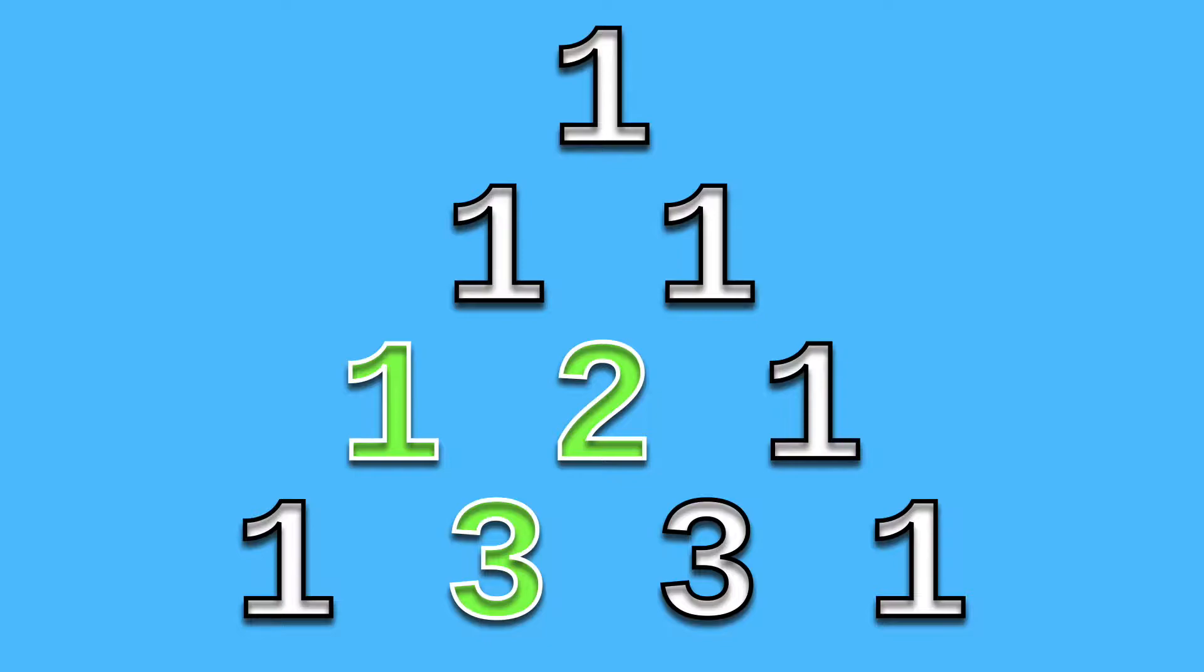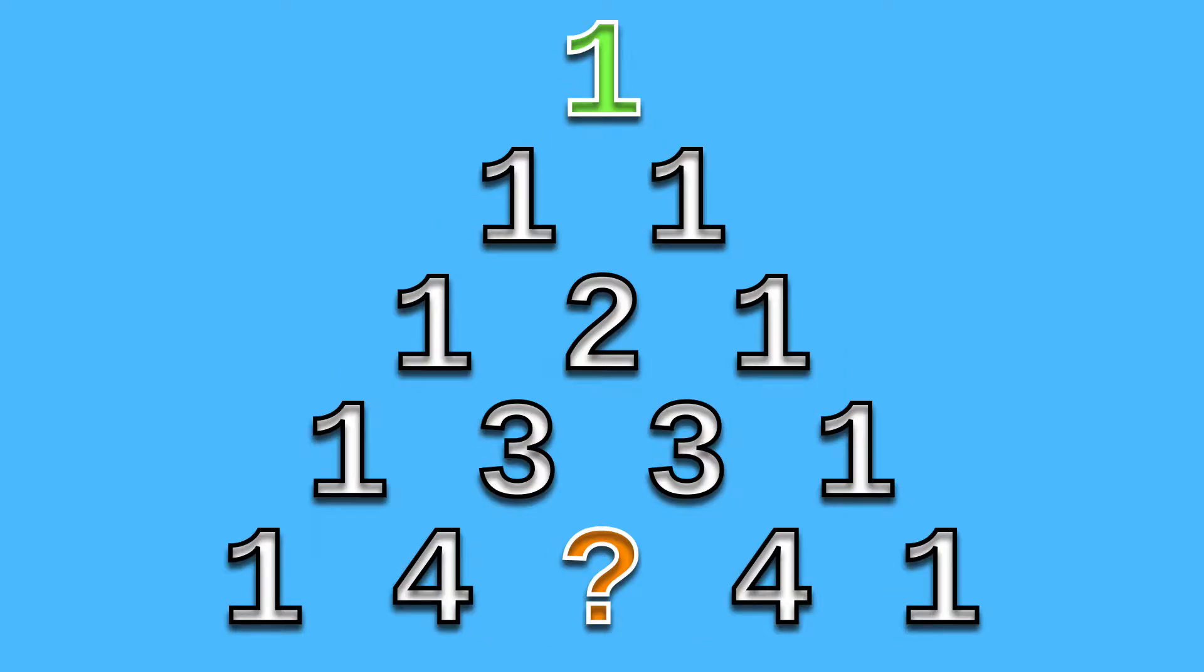For completeness, let's tackle this row by row. The first row starts off with 1. The second row is 1 and 1, both of which are created from the 1 in the first row.